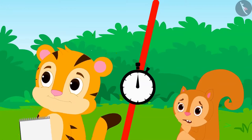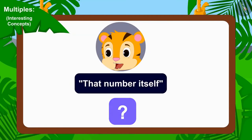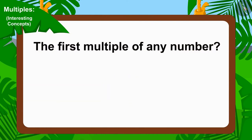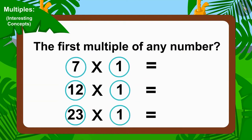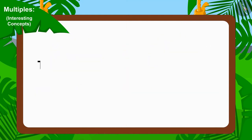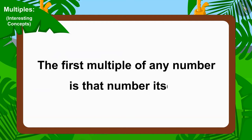Sheer Khan gave the answer: that number itself. And Chanda could not think of an answer. Is Sheer Khan's answer correct? What will we do if we want to find the first multiple of any number? We must multiply that number by one. And if we multiply any number by one, the answer will be the number itself. So, Sheer Khan's answer is absolutely correct. The first multiple of any number is that number itself.